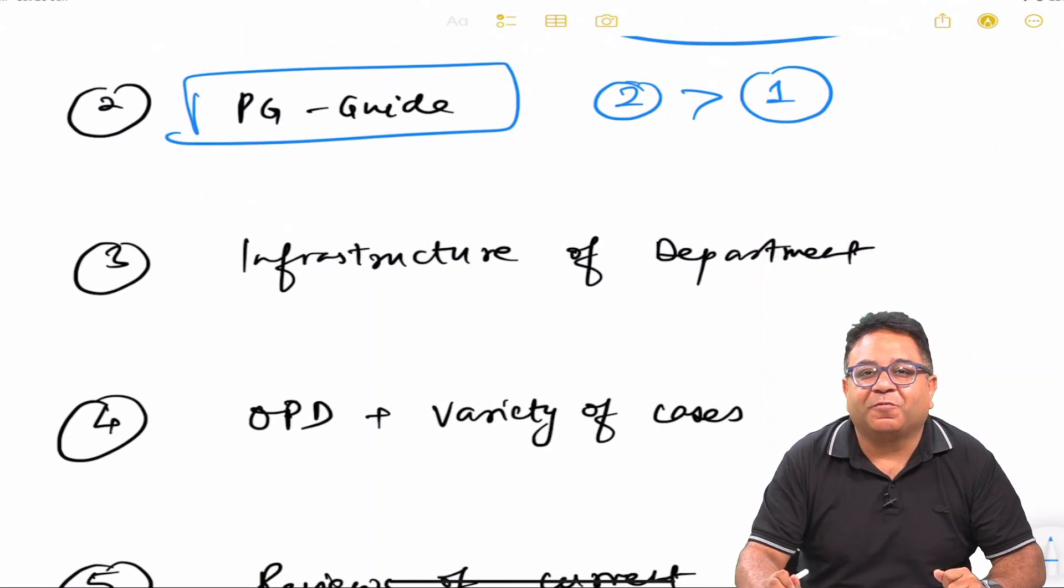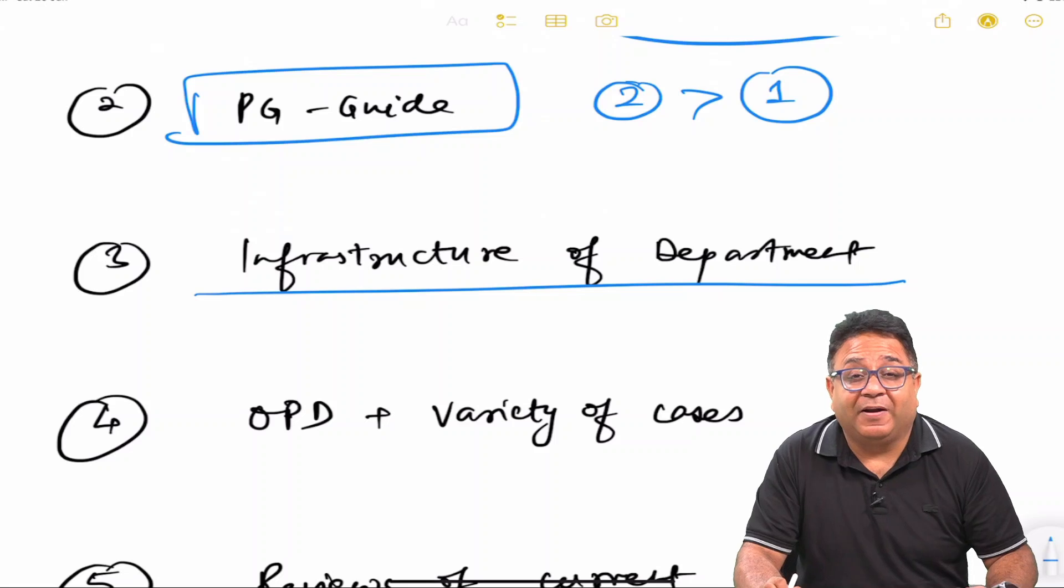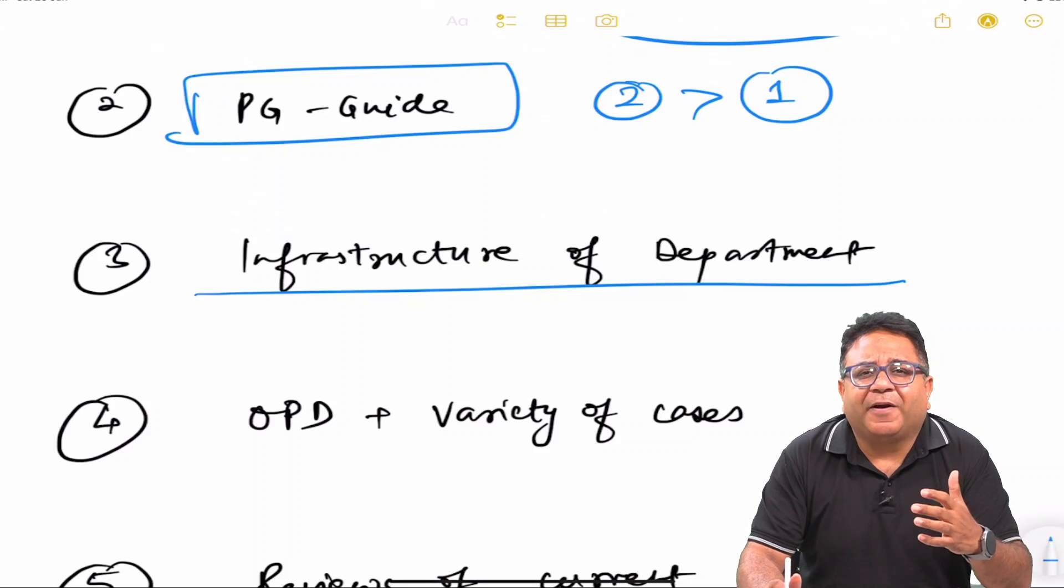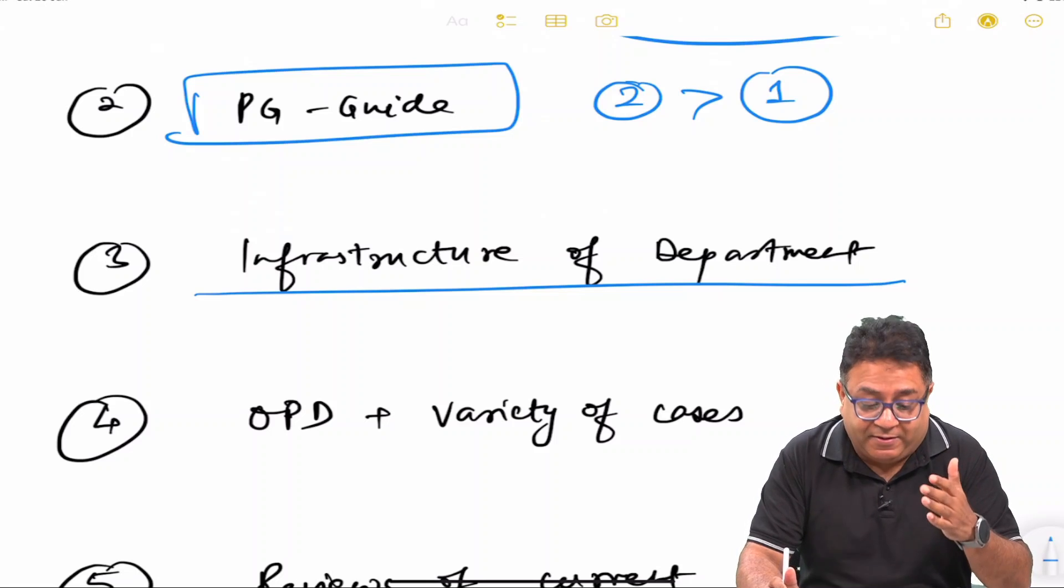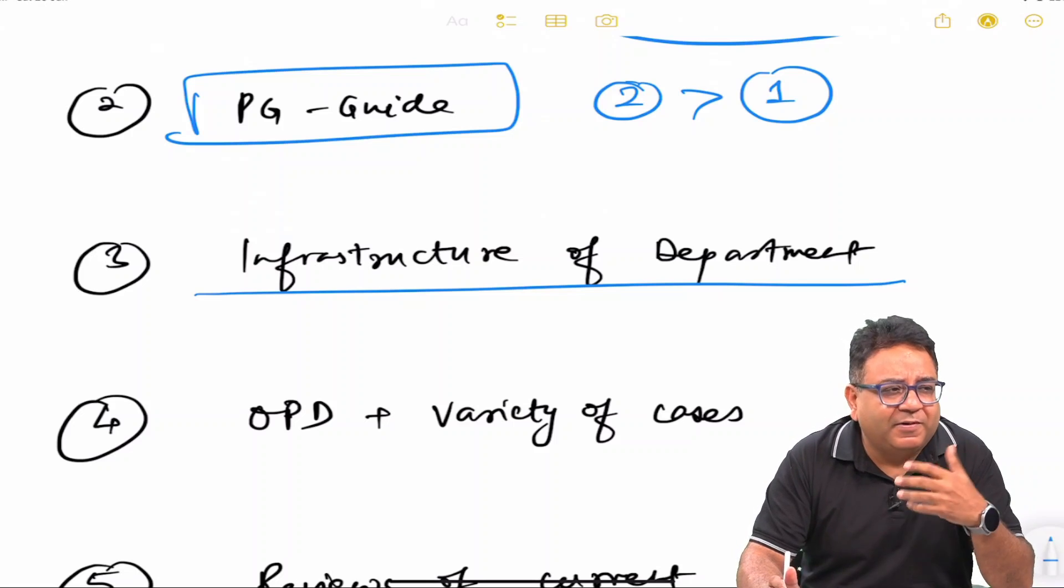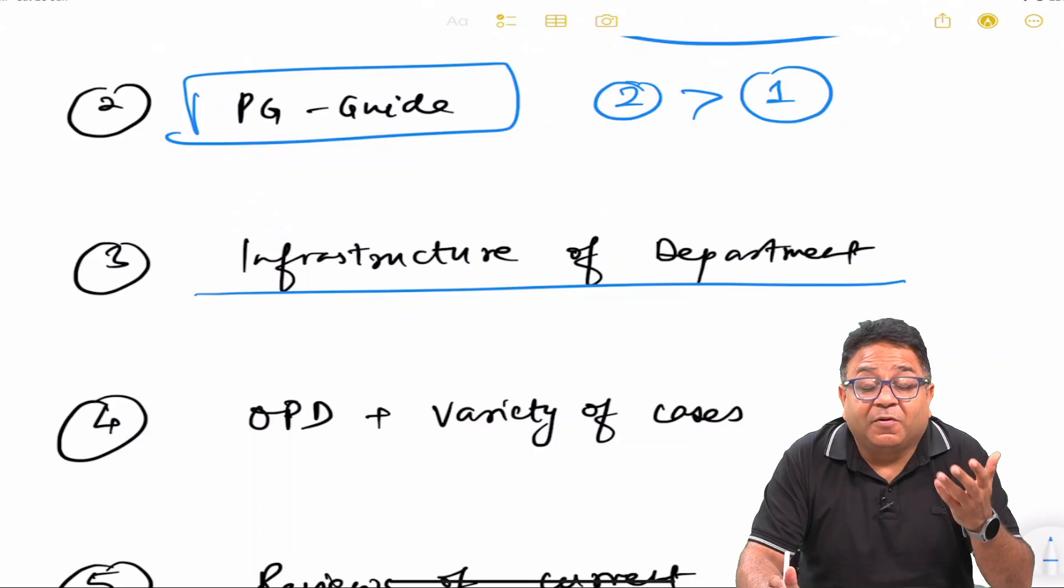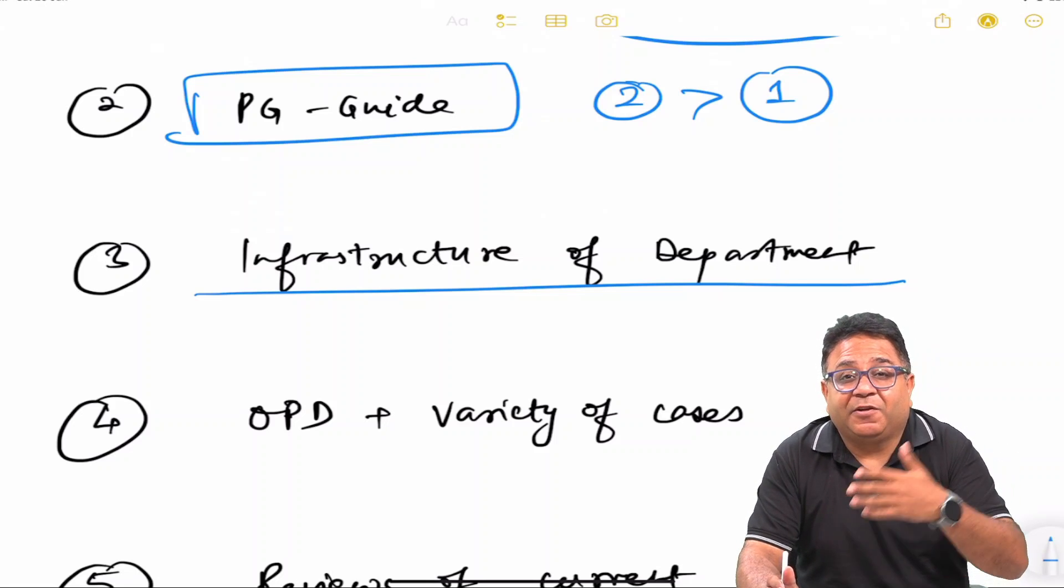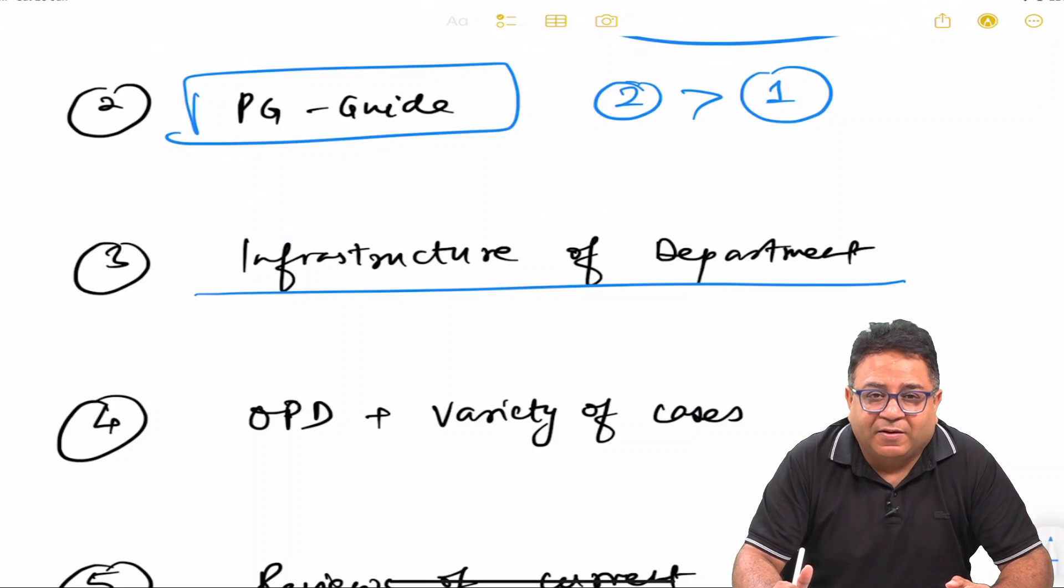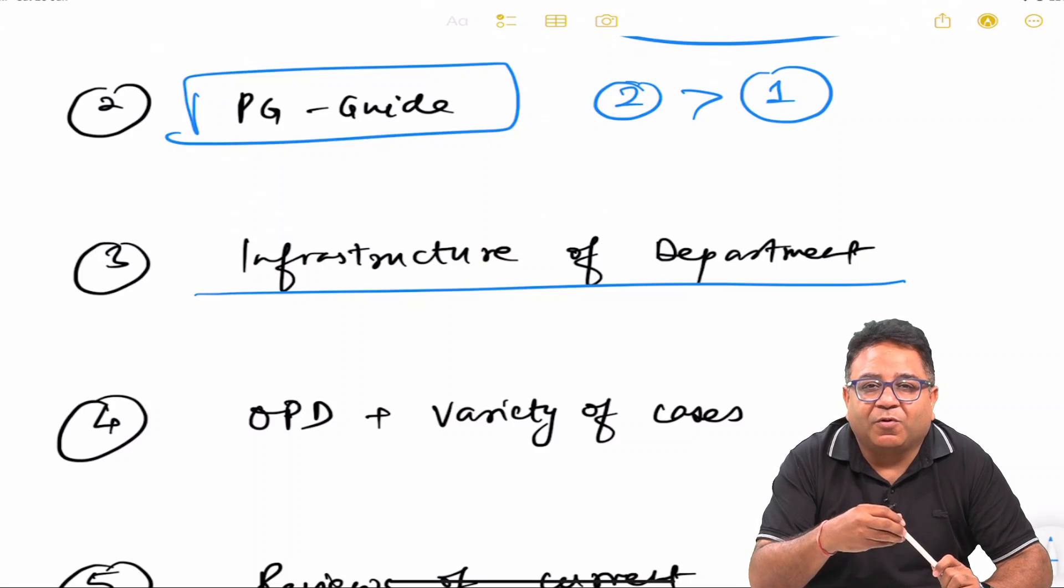Third comes the infrastructure of the department. Infrastructure of department means that department should be well equipped—like endo should have microscope, prosto should have ceramic metal lab or latest scanners and all that. Even OMR, if the college has a CBCT or something like latest things being incorporated, then only you will be able to learn. Implants are there, many things are added up nowadays by the colleges.